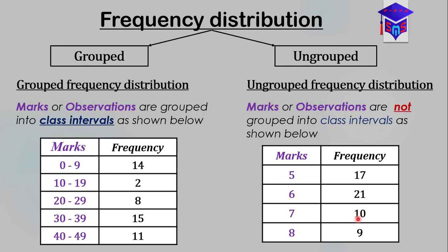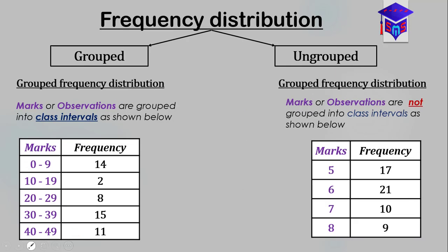Under ungrouped frequency distribution the marks are not grouped, whereas in grouped frequency distribution the marks are grouped into class intervals. Let's look at the first class interval — 0 to 9. What we are saying is that all marks from 0 to 9 should be recorded against this class interval, and all marks from 10 to 19 against that one.